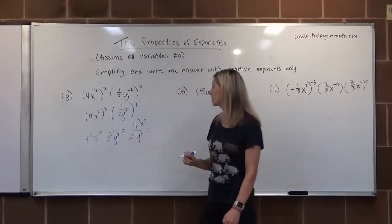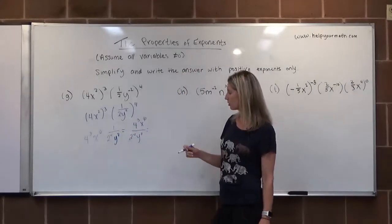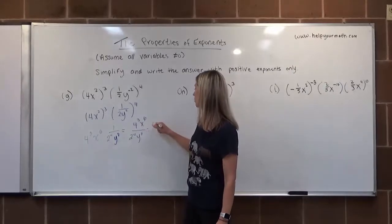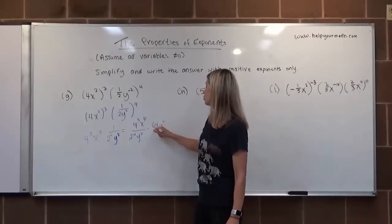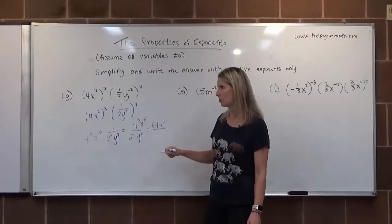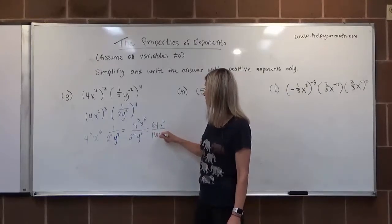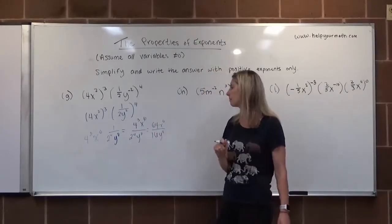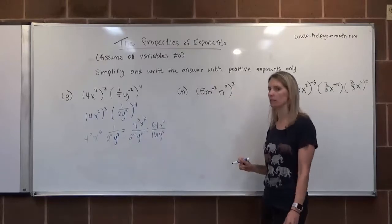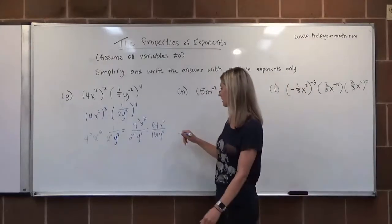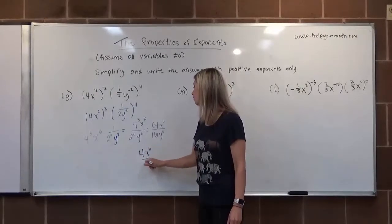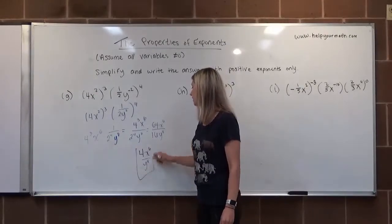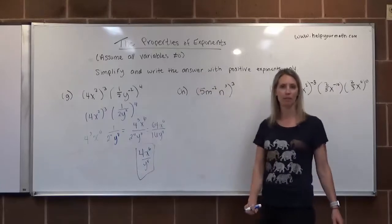Now let's clean up the numerical factors. 4 cubed is 4 times 4 times 4, which is 64. 2 to the 4th is 2 times 2 times 2 times 2, which is 16. Since 64 and 16 share a common factor of 16, we simplify. The final answer for letter G is 4x to the 6th over y to the 8th.